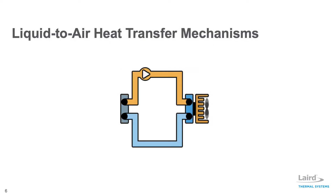Liquid-to-air assemblies cool or heat a coolant in a recirculating liquid circuit. Heat is absorbed by an external liquid heat exchanger and moved through a liquid circuit by an external pump. Heat is absorbed by the cold side liquid heat exchanger, then pumped by thermoelectric coolers through the hot side heat exchanger and dissipated to the ambient environment. This configuration is ideal for spot cooling where localization of a thermoelectric assembly is not possible due to space constraints. Common applications are imaging systems, medical diagnostics, and laser systems in the industrial, semiconductor, and medical markets.